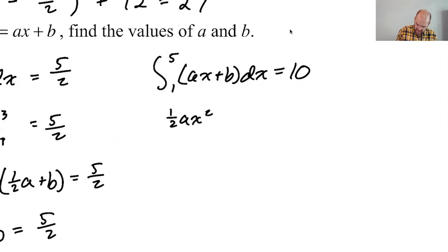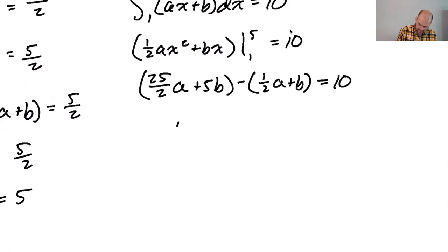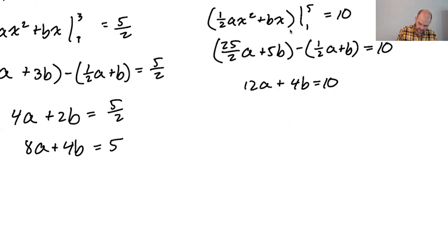So we get one half ax squared plus bx from one to three is five halves. So nine halves a plus three b minus one half a plus b equals five halves. Nine halves minus one half is eight halves, so four a. And then three b minus b is two b equals five halves. So that's eight a plus four b is five. That's one equation. It's weird that this is going to come down to an algebra one system of equations that we need to solve.